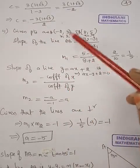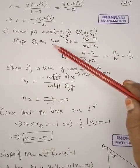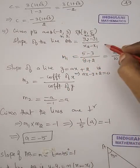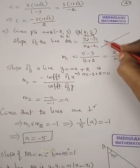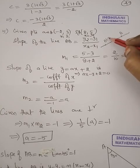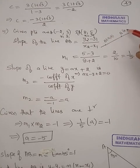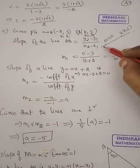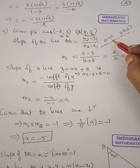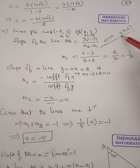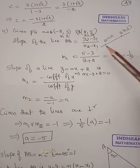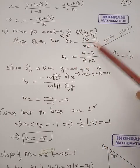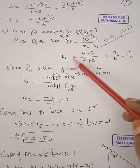Given points are AB. Slope of the line AB, minus 2 comma 3 and 8 comma 5, slope of the line AB equal to formula y2 minus y1 divided by x2 minus x1. This is m1.